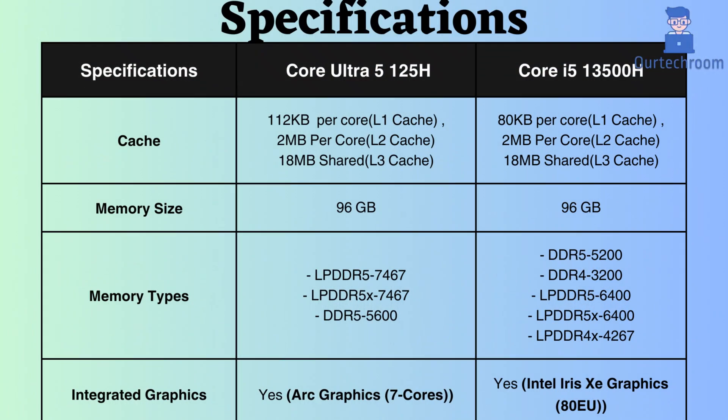In terms of cache size, the Core Ultra 5 125H has a slightly higher L1 cache compared to the Core i5-13500H. A larger cache aids in faster data access and reduced latency.